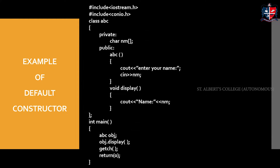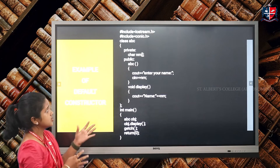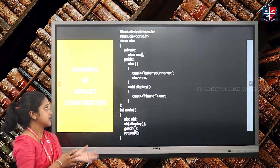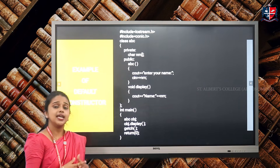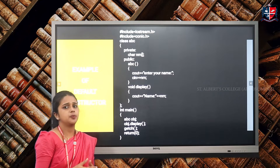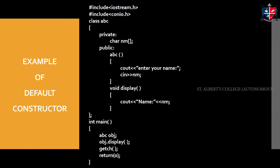Now we will see an example of a default constructor. Default constructors are constructors which accept no parameter. This is a simple program which has the constructor and displays the name of a particular user. Here we have a class called ABC. Inside the class, we have the data member NM for storing the name. We have declared a constructor where the constructor accepts no parameter and has no return type.